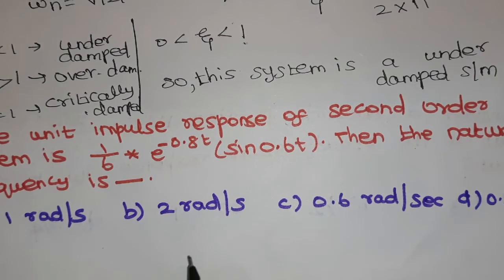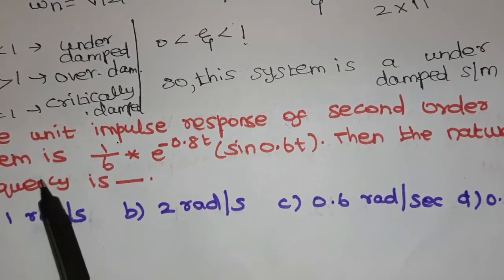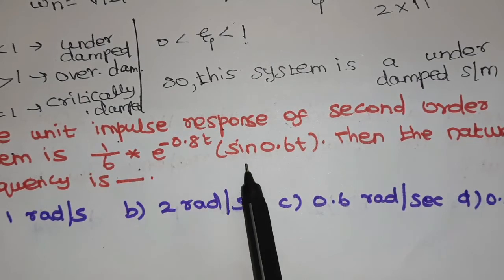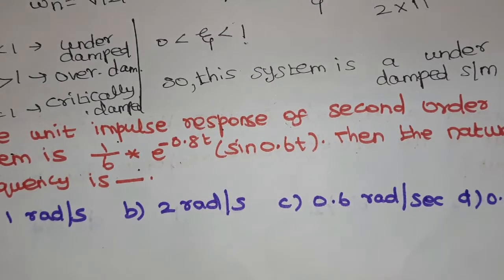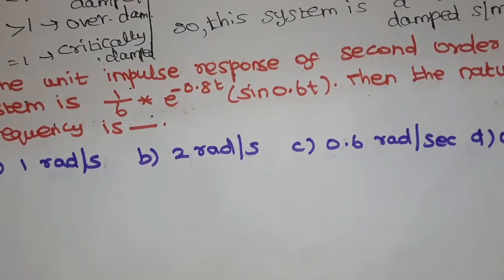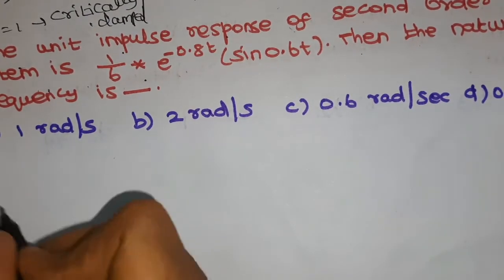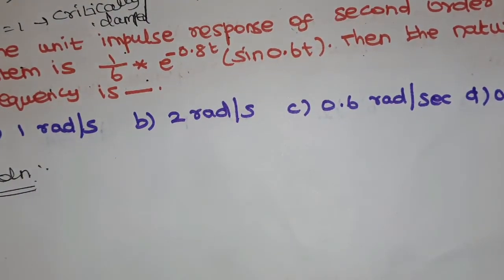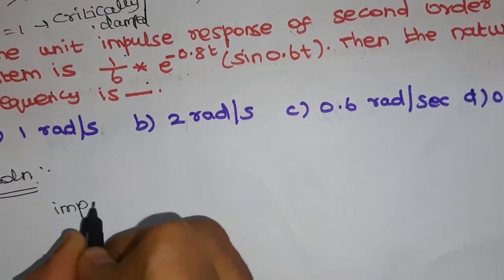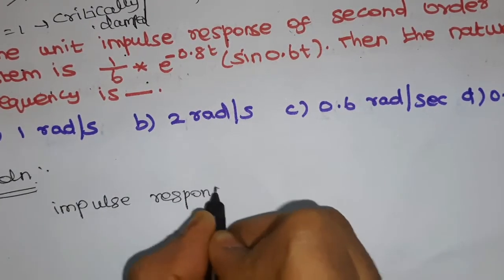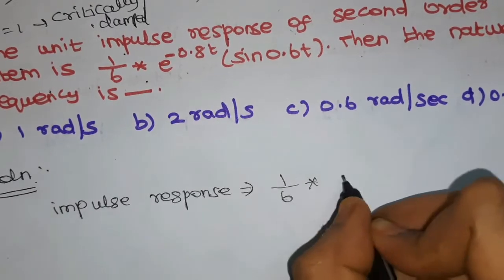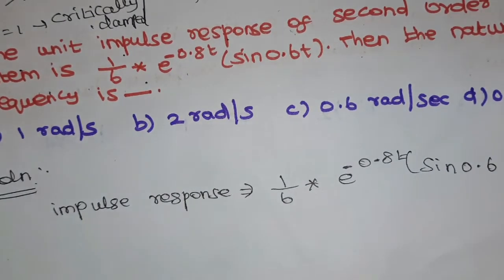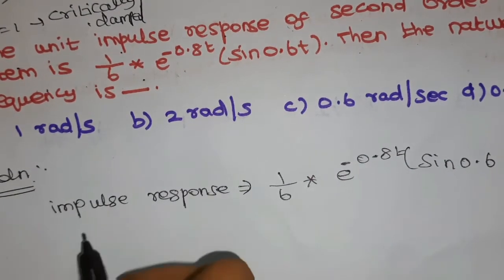Moving on to the next problem: the unit impulse response of a second-order system is given as (1/6)·e^(-0.8t)·sin(0.6t), and we need to find the natural frequency. Four options are given. The solution starts by taking the Laplace transform of the given impulse response.